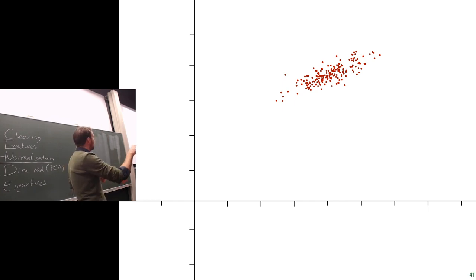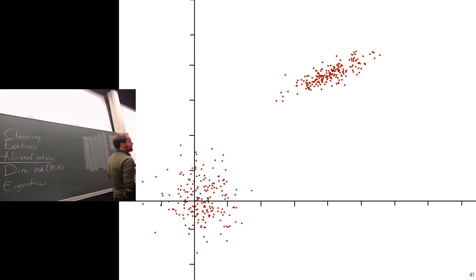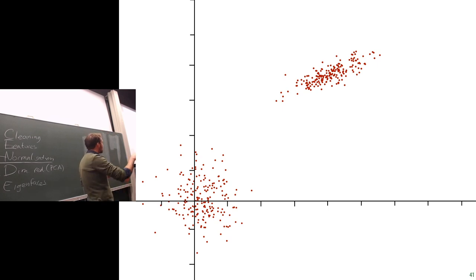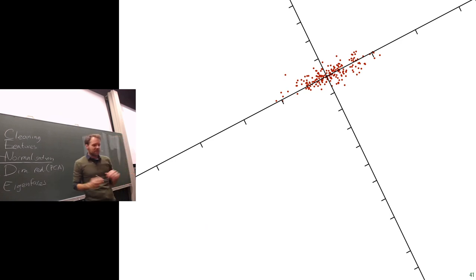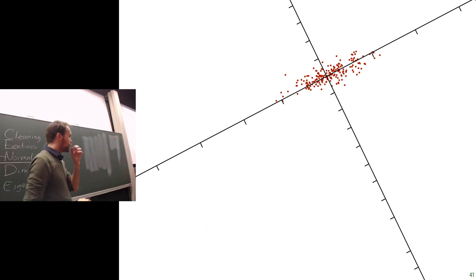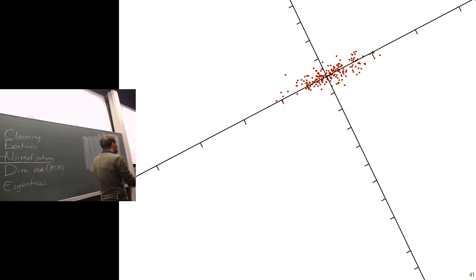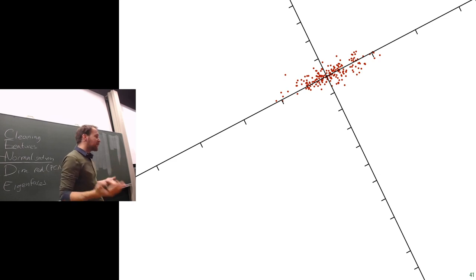Essentially, given data like a tilted ellipse, we want a linear transformation that makes it look like a sphere. Alternatively, we can think of this as choosing a different basis — a different coordinate system — for our data. That's really all we're doing, and it's a standard linear algebra operation. To explain it, I need a couple of preliminaries.